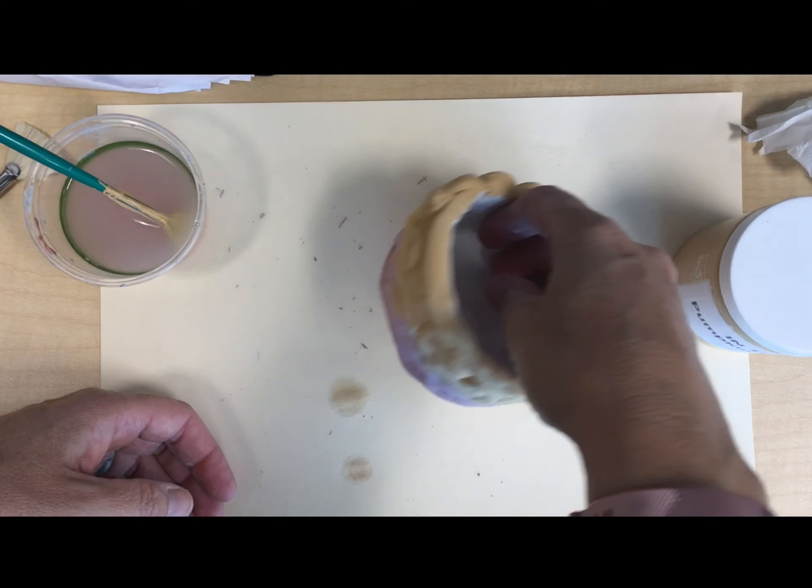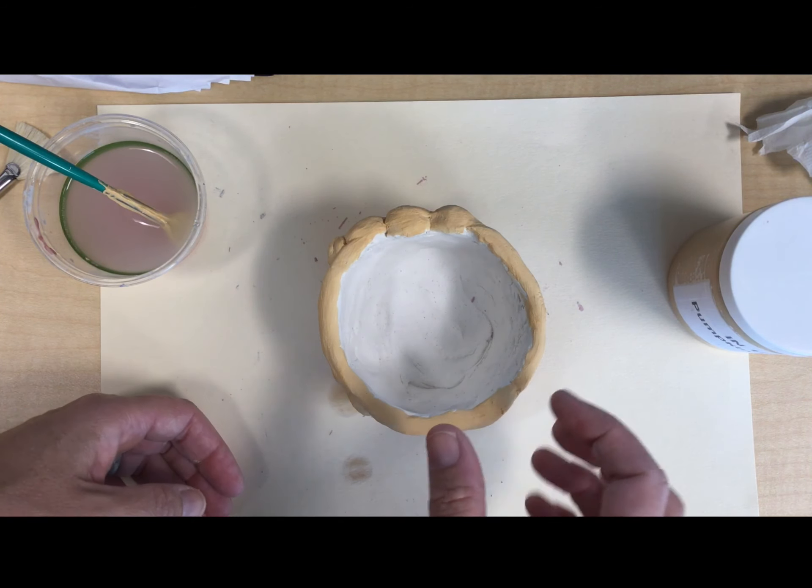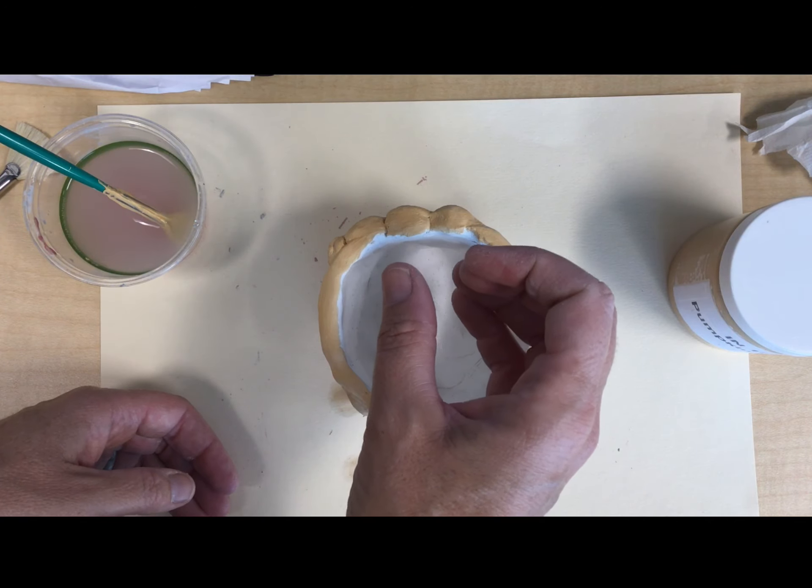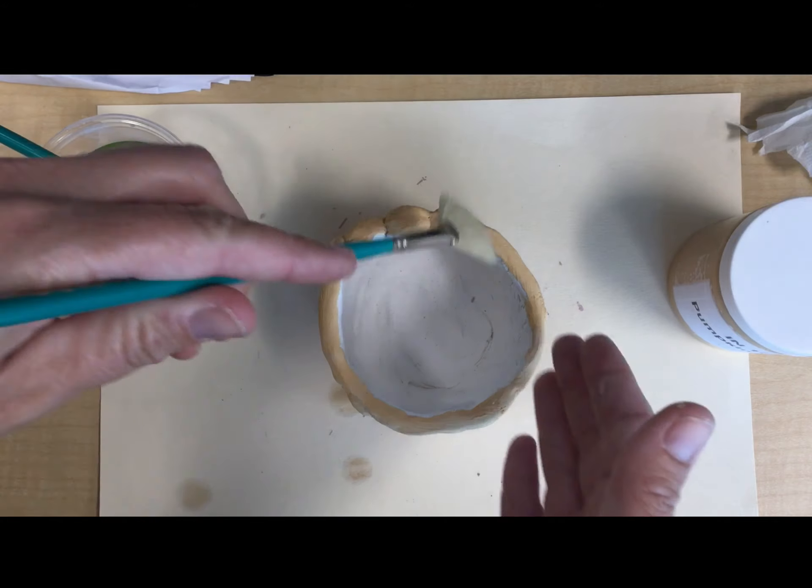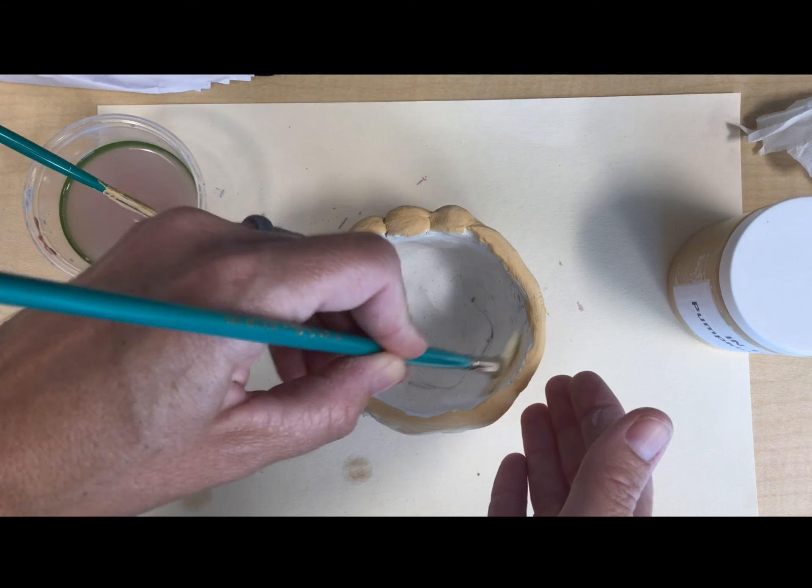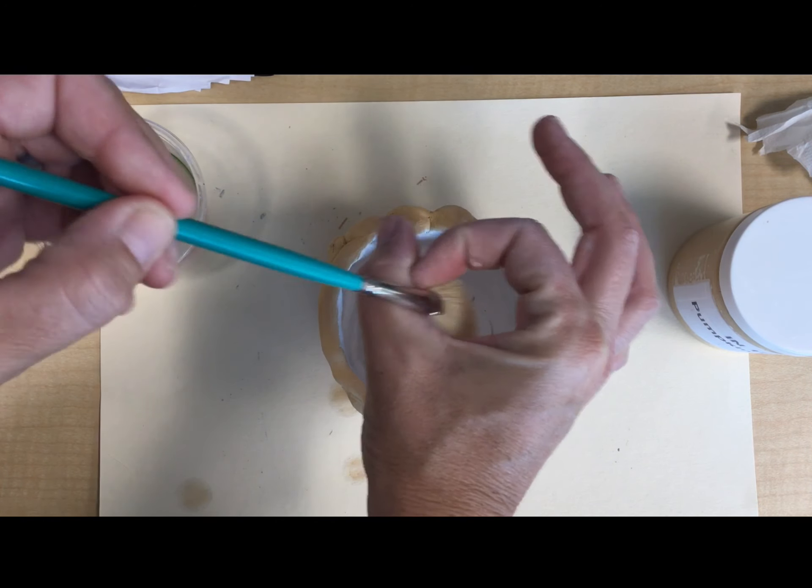Once you've glazed the outside of your vessel, you are welcome to glaze the inside. For those of you that have a very narrow vessel, I would only glaze the little section that your brush can touch. Just a little bit along the rim, especially if the opening of your vessel is very small.